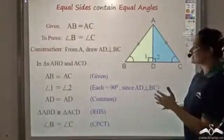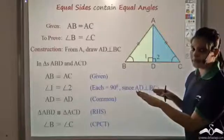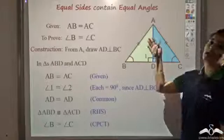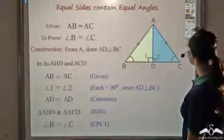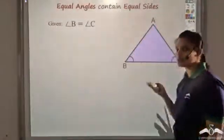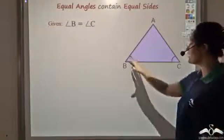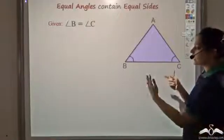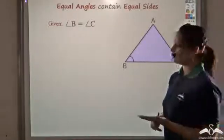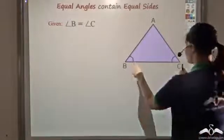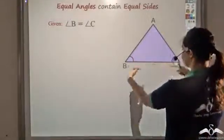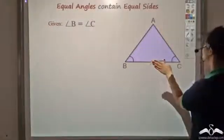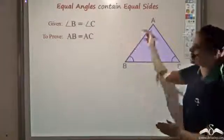Now we have seen that equal sides contain equal angles, but the converse of this also holds true: if you have equal angles, you would have equal sides. Let us try to prove that — equal angles also contain equal sides. Let us say angle B is equal to angle C, and we want to prove that two sides are equal. Note that angles B and C lie on side BC, so leaving BC, the other two sides — AB and AC — should be equal. So I want to prove that AB is equal to AC.